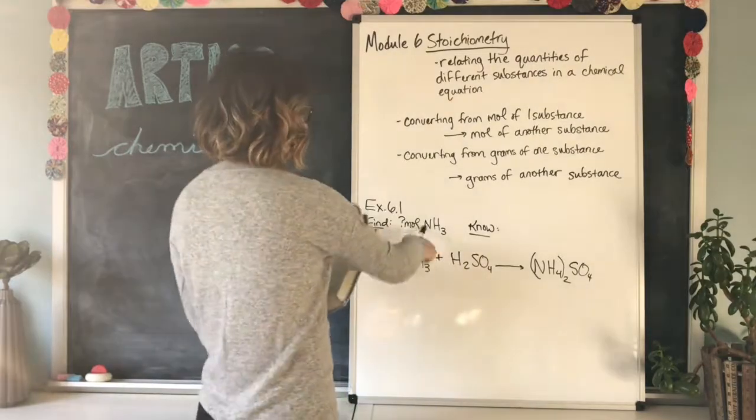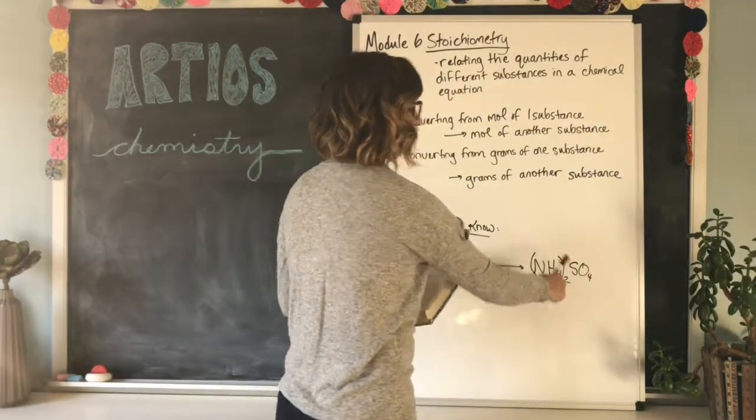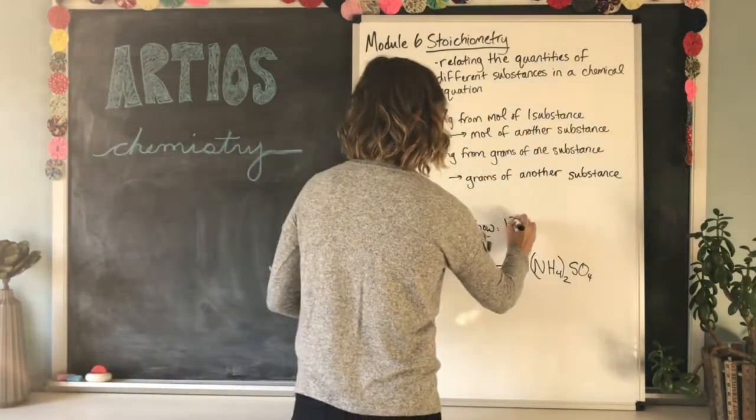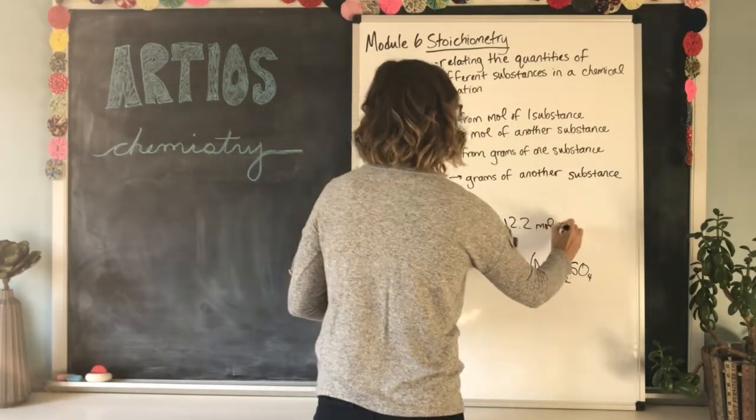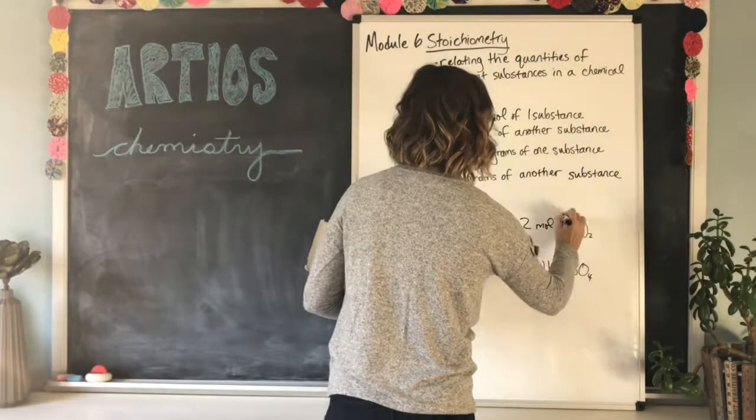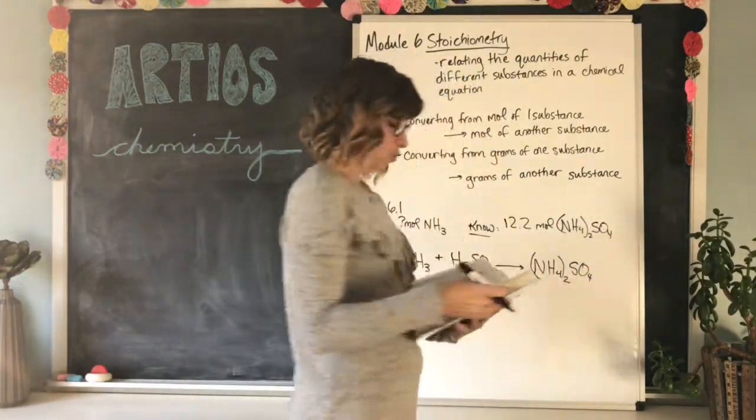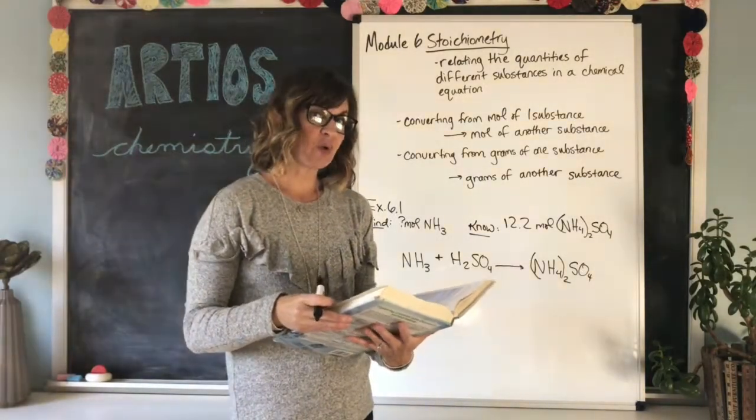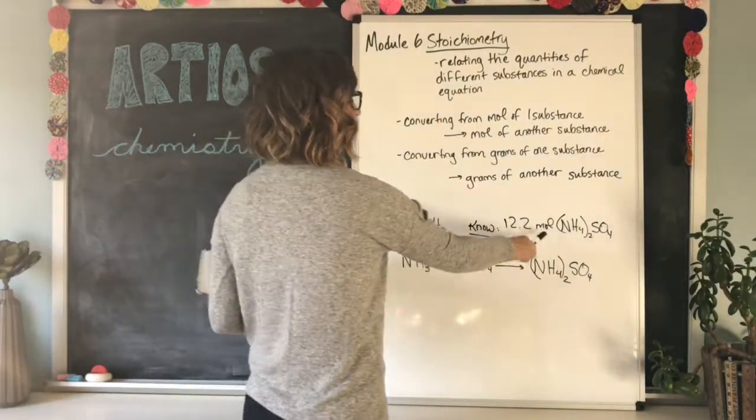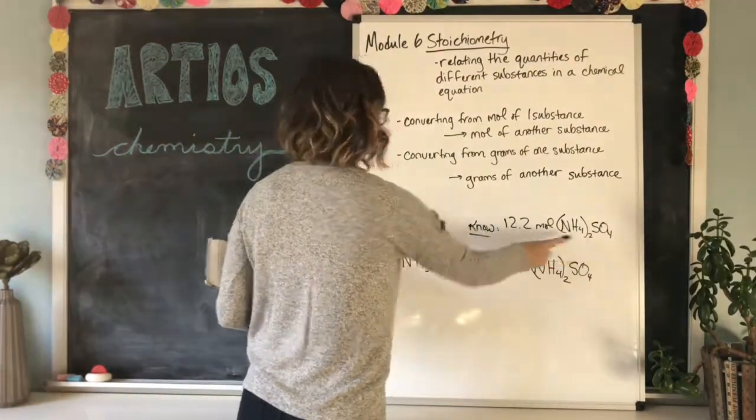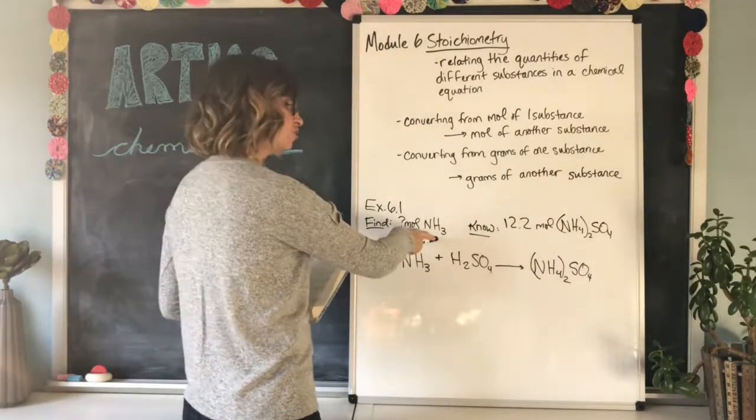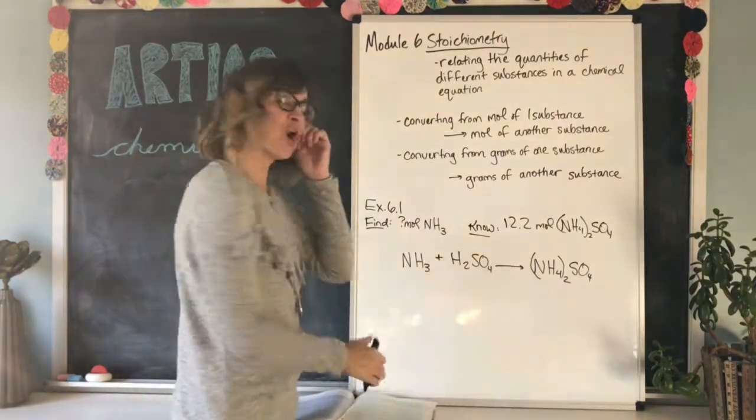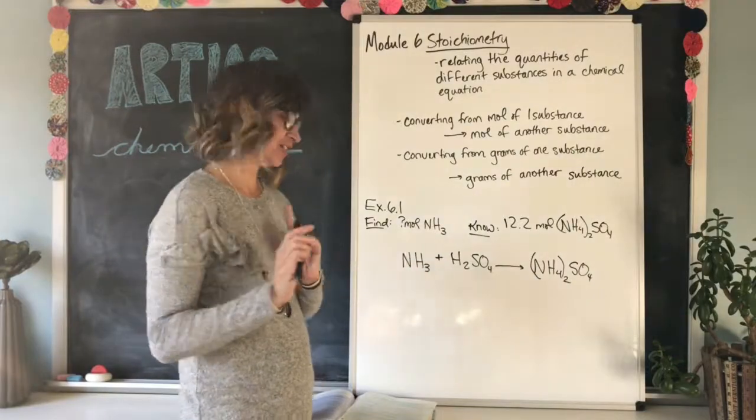So we're looking for how many moles of ammonia. What we know is how many moles of the product that we're going to end up with. So over on the know side, we're going to write 12.2 moles of NH4, two SO4. We know that we end up with that much fertilizer. We also know the ratio between moles of the fertilizer and moles of the reactant, NH3. No, we don't yet. We have to balance the equation. We don't yet know the ratio because we haven't balanced the equation yet.